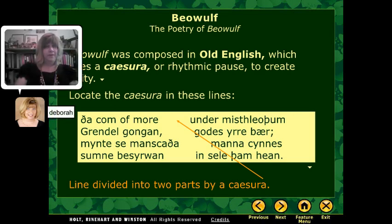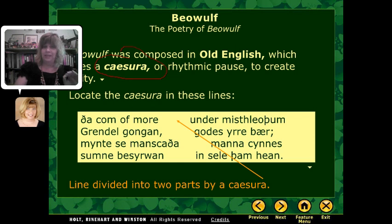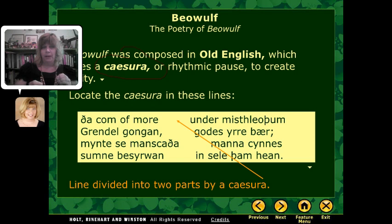Beowulf was composed in Old English, and one of the techniques that they used was something called a caesura, which is actually the same root of our word cease. To cease something means to stop it, and a caesura in poetry is a rhythmic pause — something that's done to create rhythm and unity.